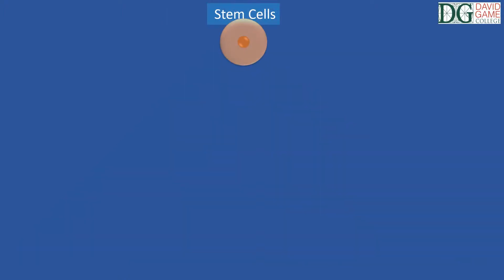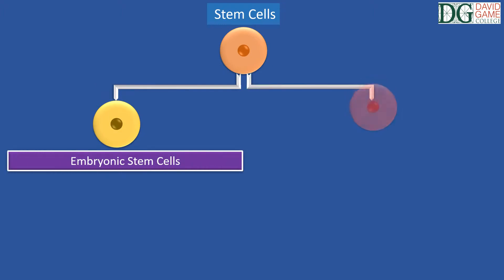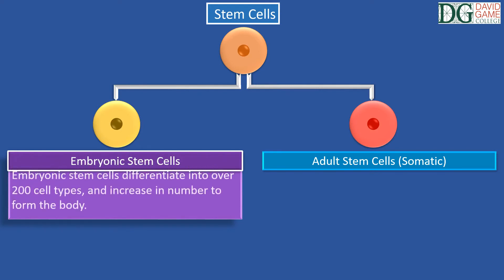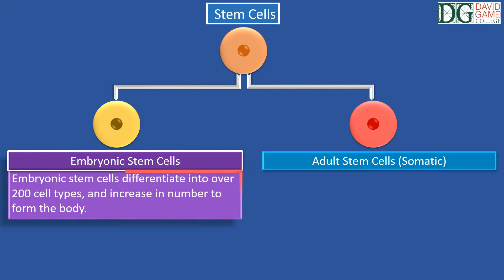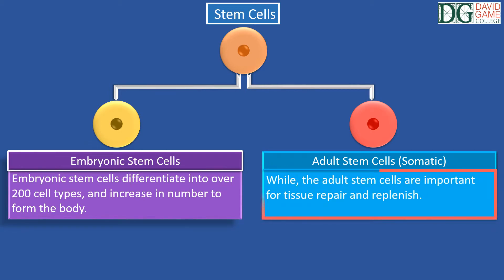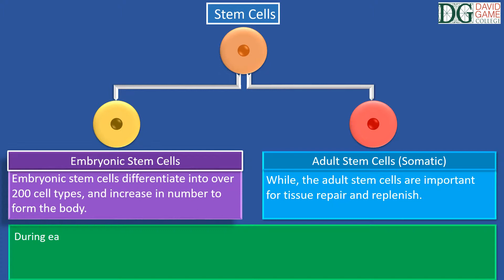Stem cells include embryonic stem cells and adult stem cells, also known as somatic stem cells. Embryonic stem cells differentiate into over 200 cell types and increase in number to form the body, while the adult stem cells are important for tissue repair and replenishment.